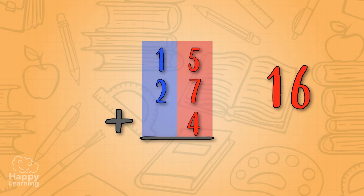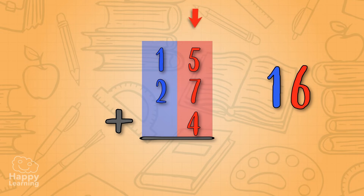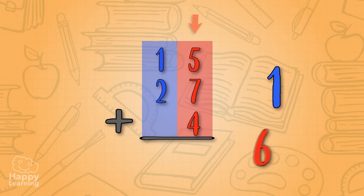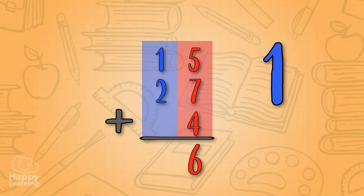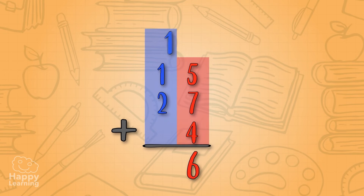With the number sixteen, six represents ones and one represents tens. Because there are no more units to add, we put the number six in the result. But number one represents tens, so we can't place it yet because we haven't added tens. So we turn it into a new summand and take it to the tens column. Now we can add up all the tens.